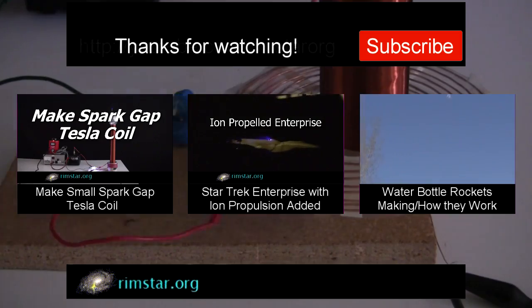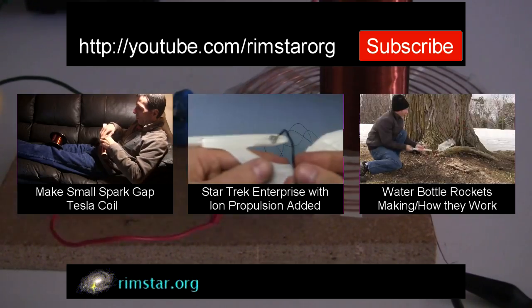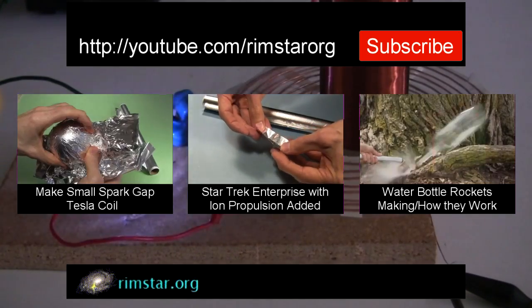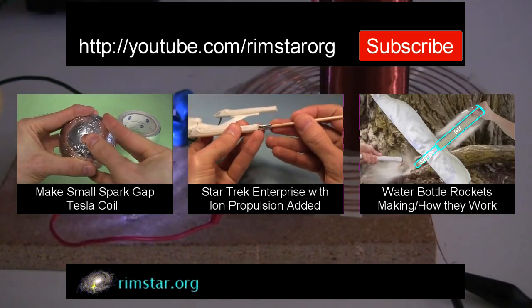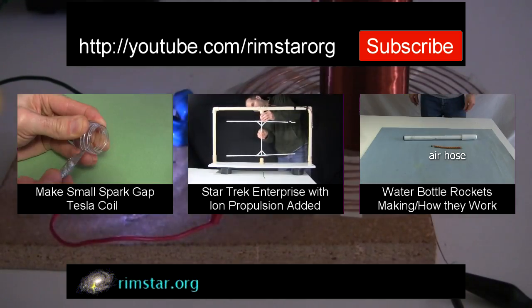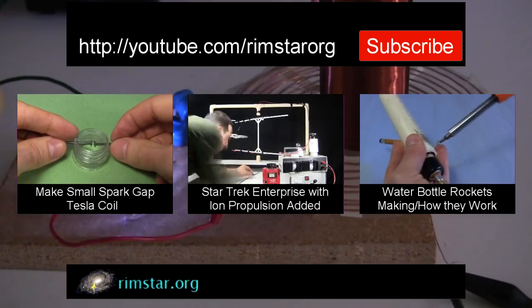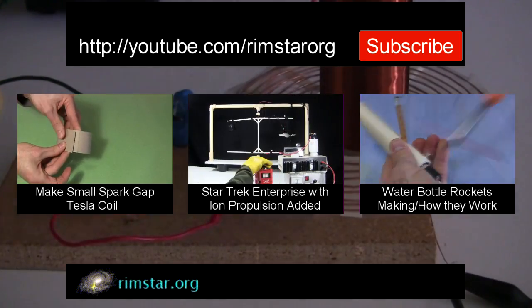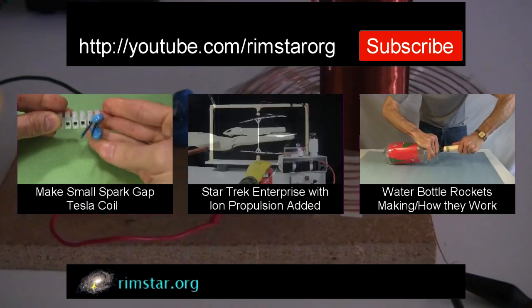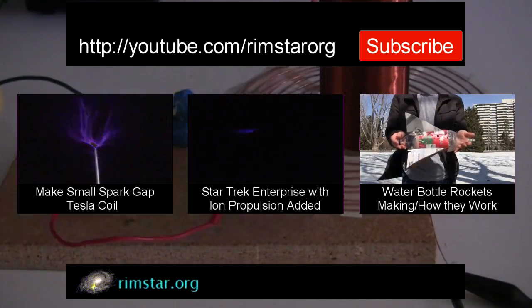Well, thanks for watching. See my YouTube channel, RimstarOrg, for more neat videos like this. That includes one showing in detail how to make this small Tesla coil. Another where I add actual ion propulsion to a Star Trek Enterprise model. And for a fun summer activity, one on making water bottle rockets and how they work. And don't forget to subscribe if you like these videos, or give a thumbs up, share with your social media, or leave a question or comment below. See you soon!